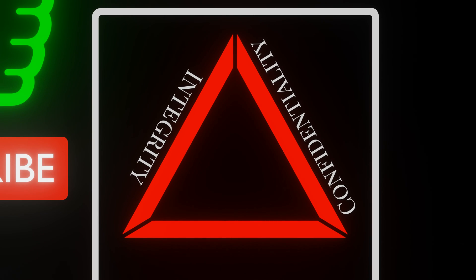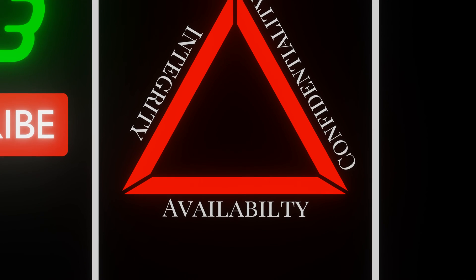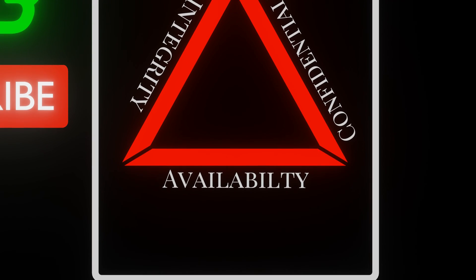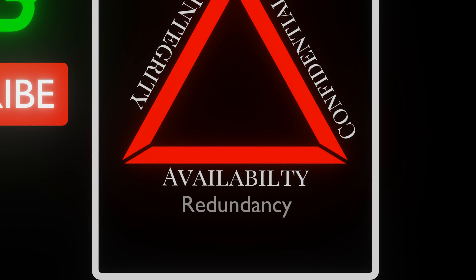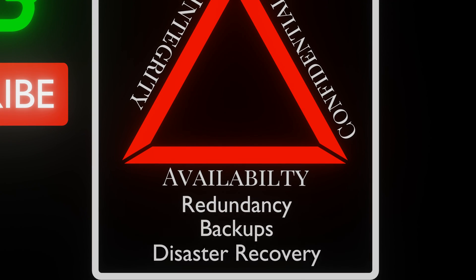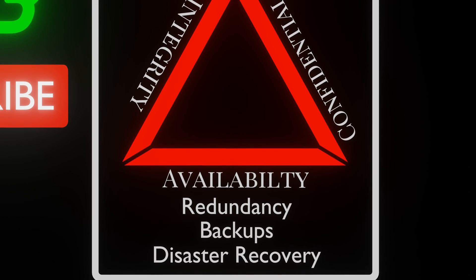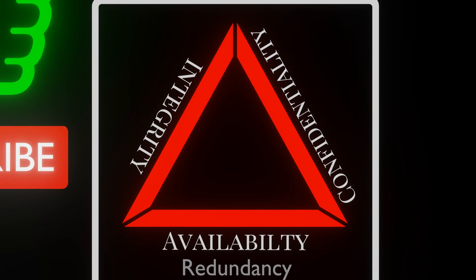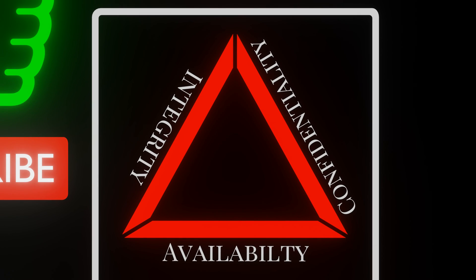Finally, we have availability. This principle is about ensuring that information is accessible and usable when it's needed. This might involve things like redundancy, backups, and disaster recovery plans to ensure that systems and data remain available even in the face of disruptions or attacks.